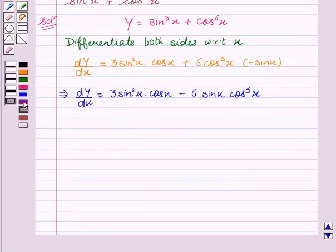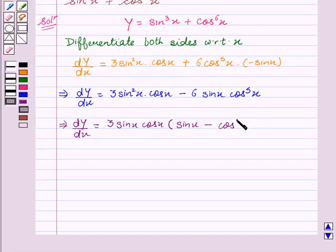This implies dy/dx equals... we take 3sinx·cosx common. This gives us sinx - cos⁴x.